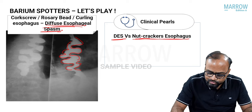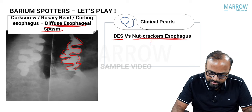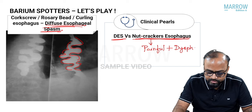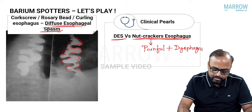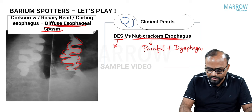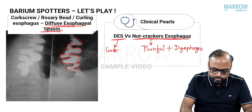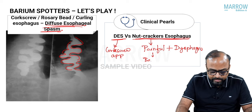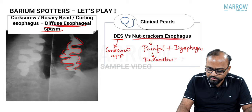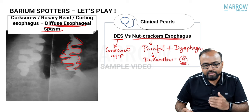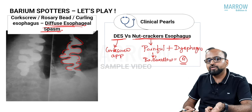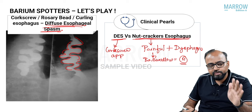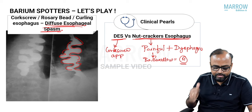There is another condition called nutcracker esophagus — also painful, due to uncoordinated contractions, also presenting with dysphagia. The way to differentiate: diffuse esophageal spasm shows corkscrew appearance on barium swallow, whereas in nutcracker esophagus the barium swallow is absolutely normal. Nutcracker esophagus can only be diagnosed on manometry by measuring luminal pressure; in diffuse esophageal spasm, manometry pressure is also raised.